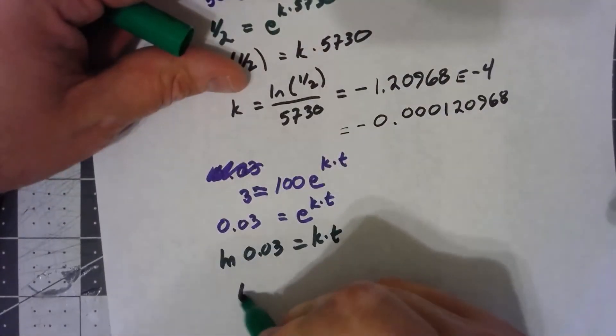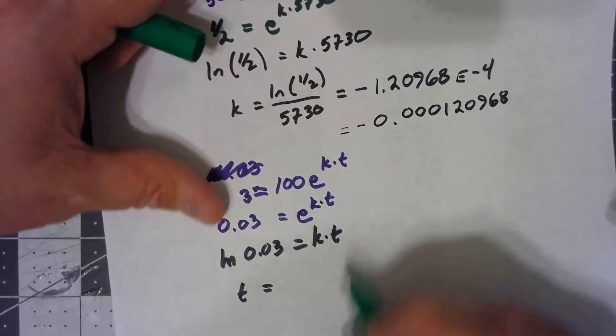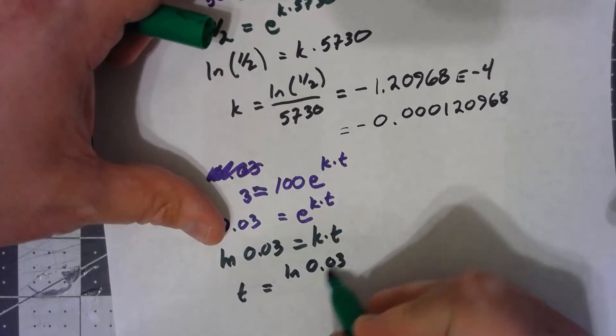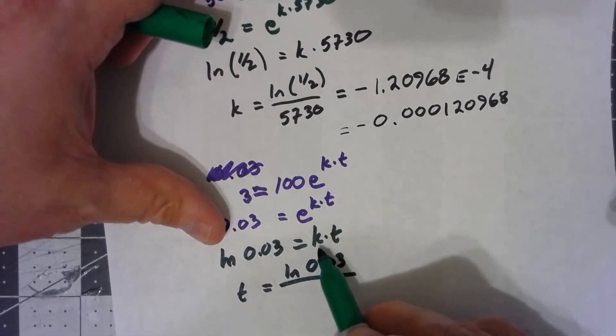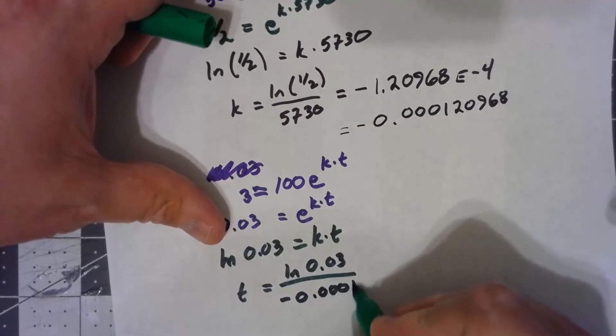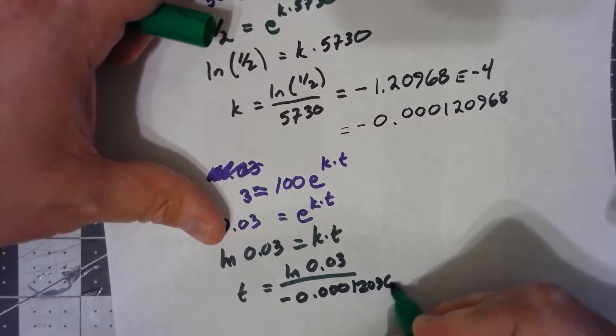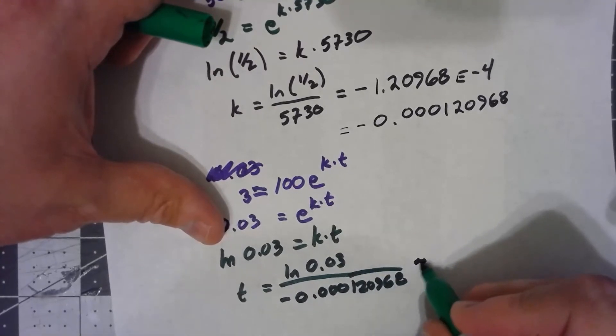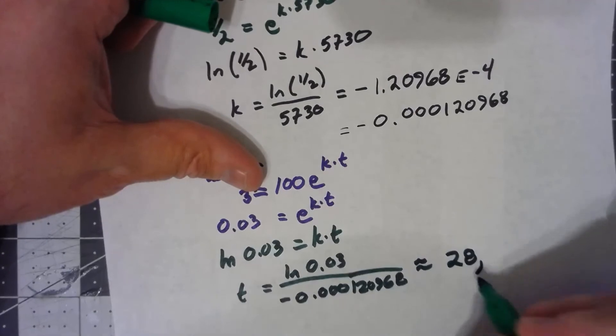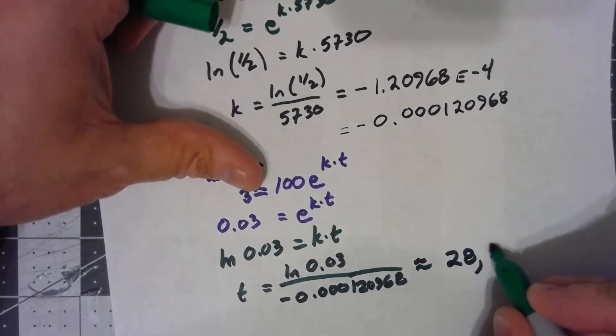So my T is the natural log of 0.03 over K. Now I'll go ahead and put that in 0.000120968. And with all that, I get about 28,987 years. And there's more decimals.